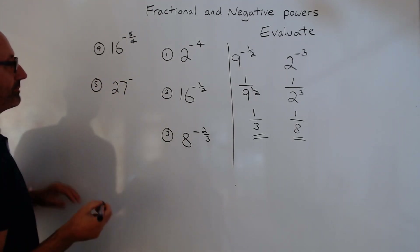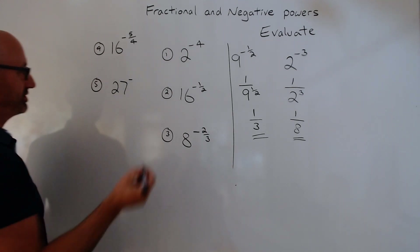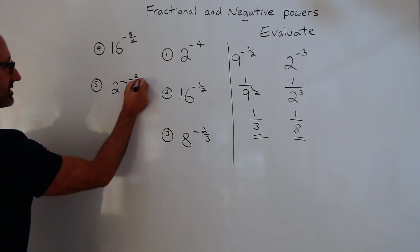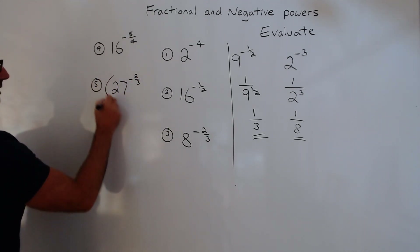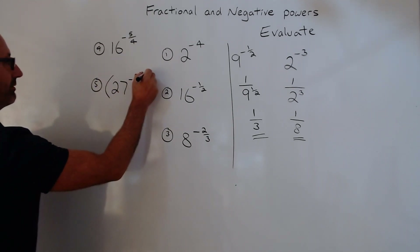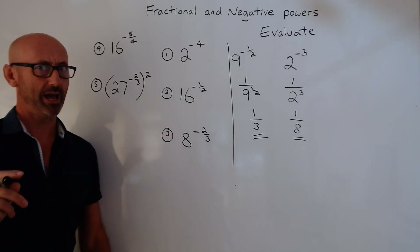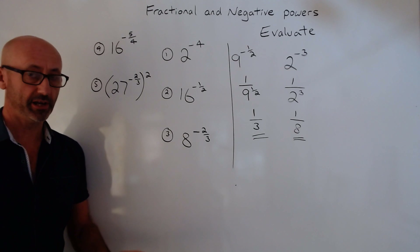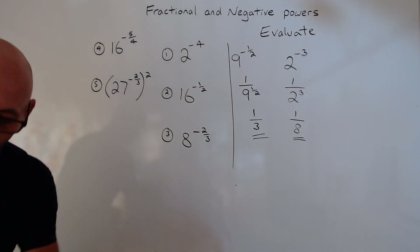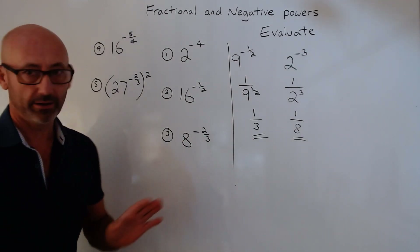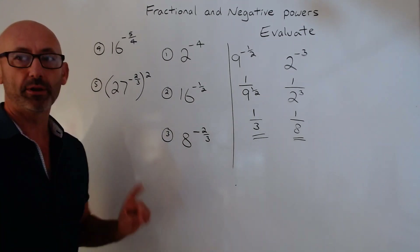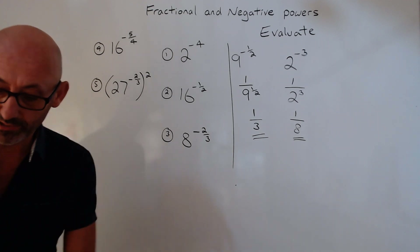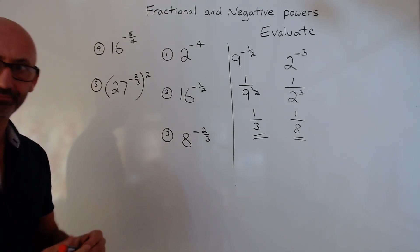This will probably be your ultimate question on the higher GCSE paper — something like this, with a bracket around it and squared. Do pause the video. Right, let's go over the answers. Nina, the fact that it says minus four — tell me where to stick it. Under the one.